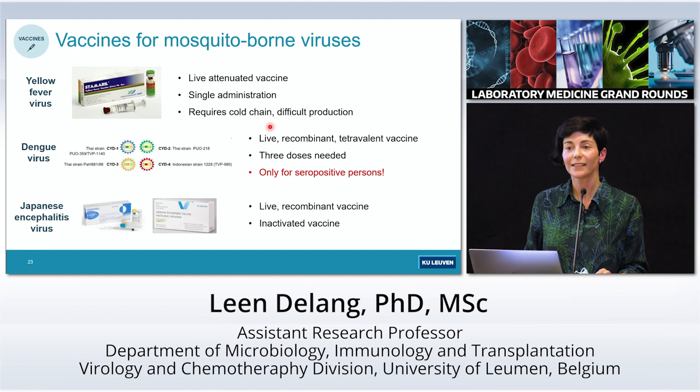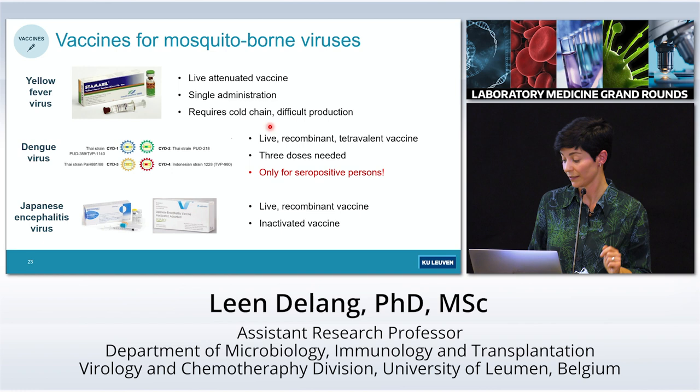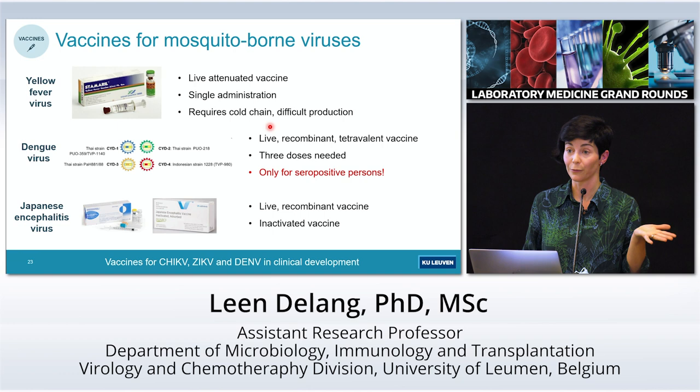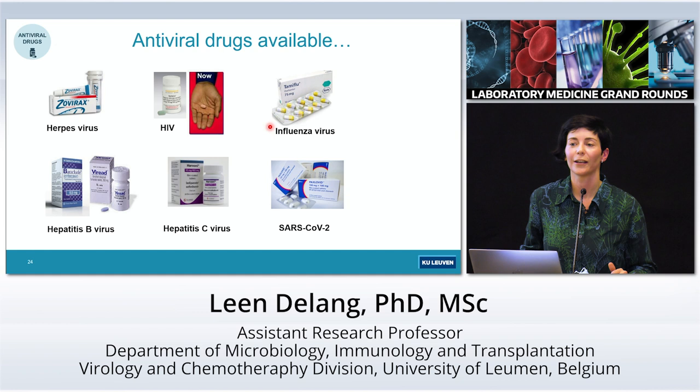The last virus for which we have vaccines is Japanese encephalitis virus, with both a live and an inactivated vaccine available. There are also many vaccines in clinical development, especially for chikungunya virus, Zika virus, and dengue virus.